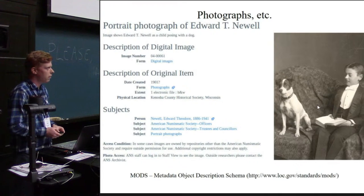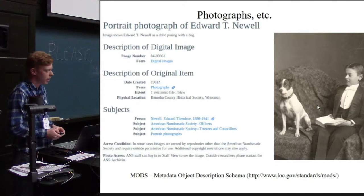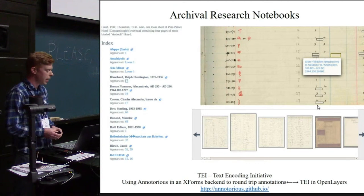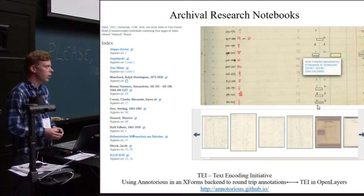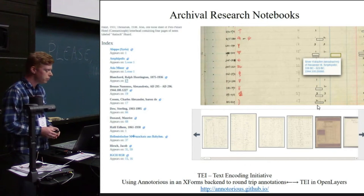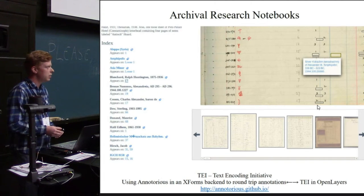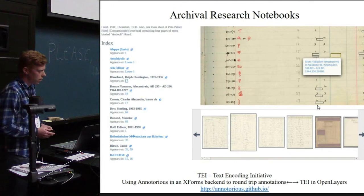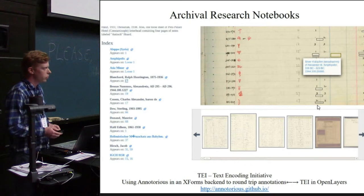We also have archival photographs and archaeological photographs that are digitized, with the metadata standard MODS from the library community. We have research notebooks which have been scanned and represented by TEI documents — TEI is a markup standard for text. We developed a system based on a JavaScript library called Annotorious, developed by Reiner Simon, who's done a lot of work on Pelagios. Our archivist annotated different lines in these notebooks linking to external resources: coins in our collection or other databases, hoards in our hoard databases, typologies, references to books. So we're putting URIs directly into our TEI documents through this annotation system.